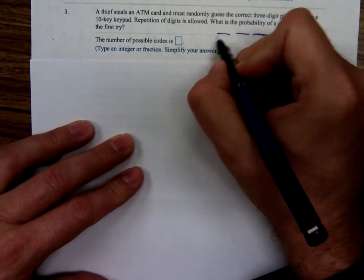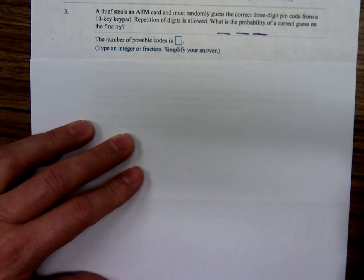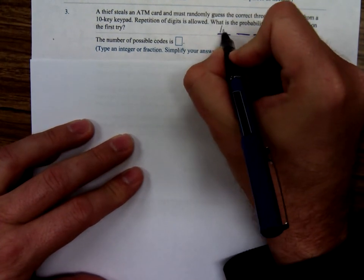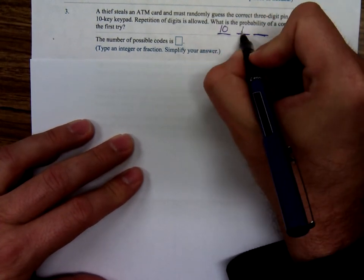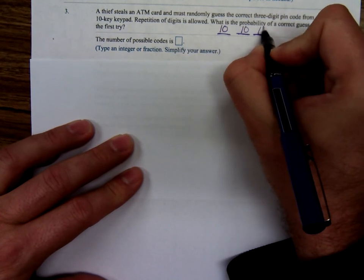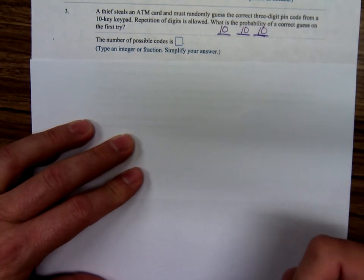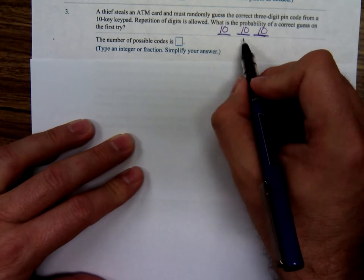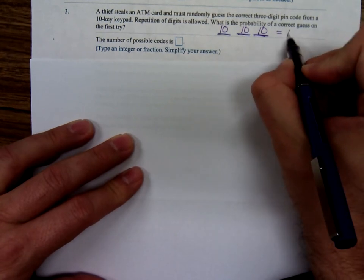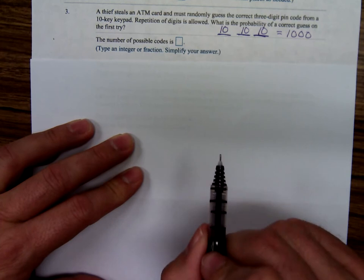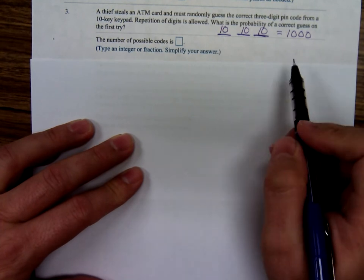Well, how many possible codes are there? Well, there's three digits, and for each of those, there's ten possibilities. Zero, three, nine. So ten times ten times ten, that would be one thousand. So there's one thousand possible codes.